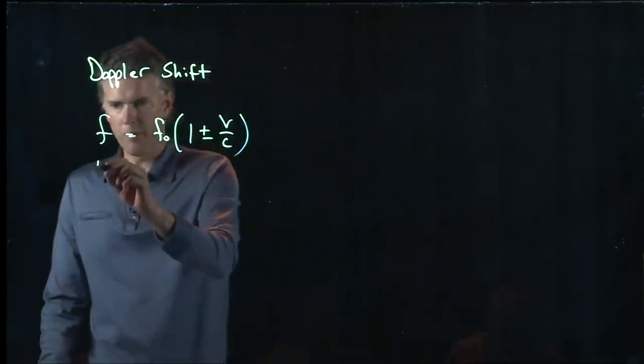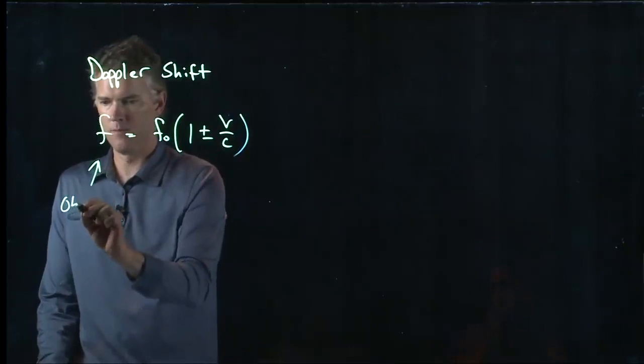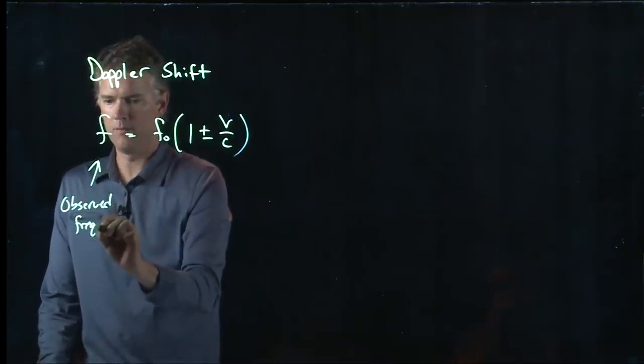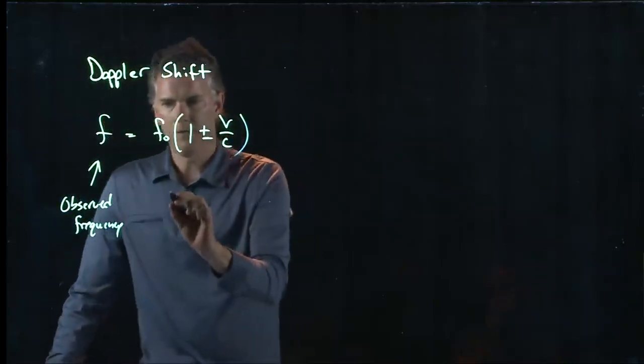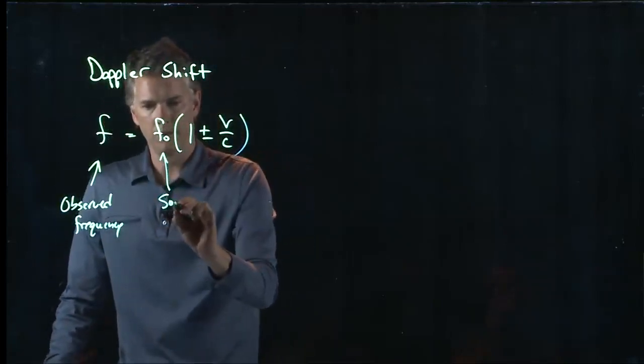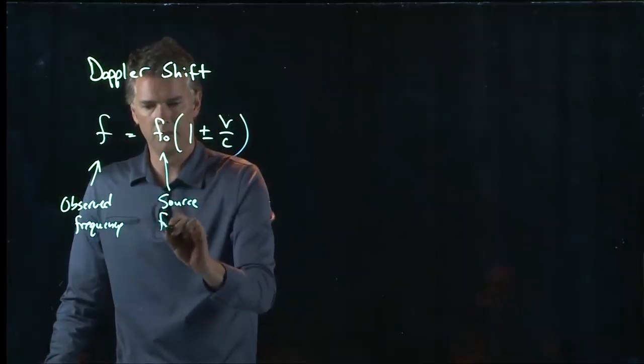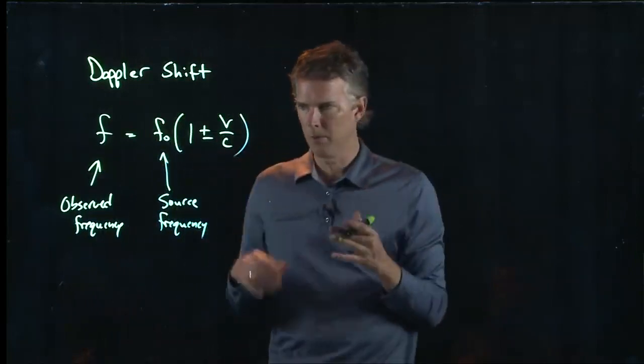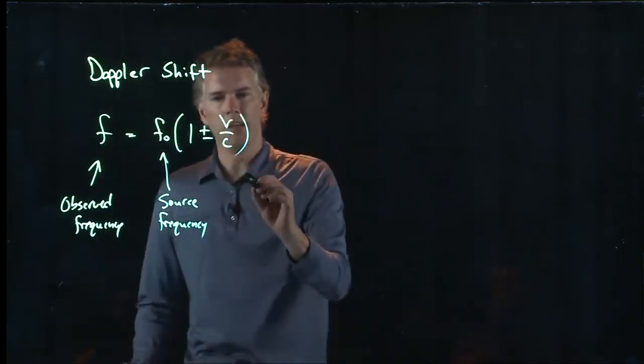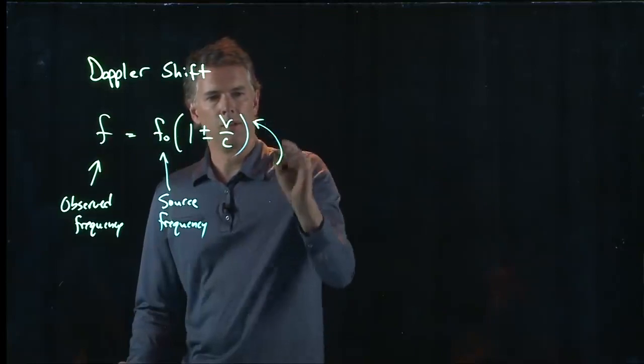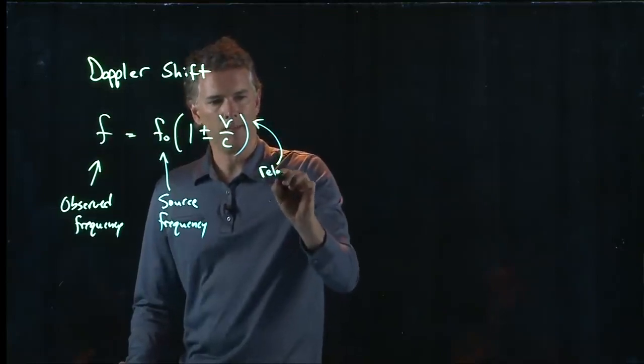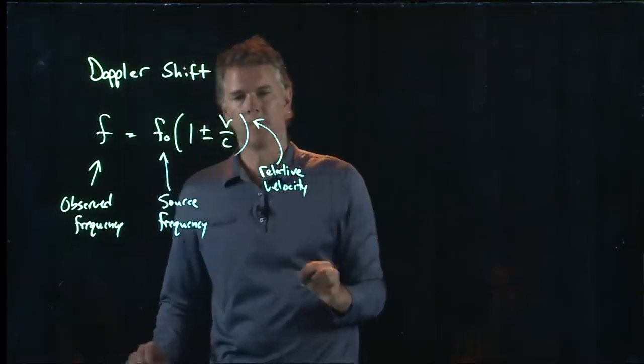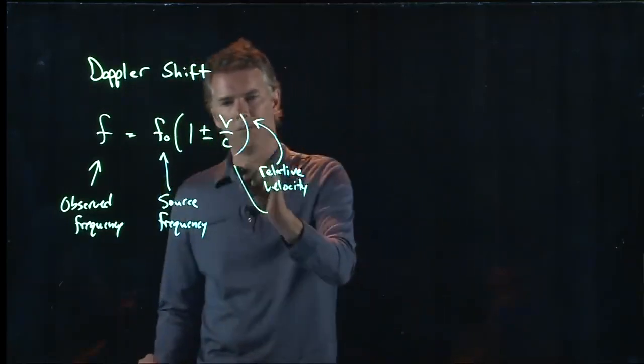So this is the frequency that you measure. The observed frequency. This is the source frequency. That way that it's emitting, if it was all at rest, what would it be? V is, of course, the relative velocity. C is speed of light.